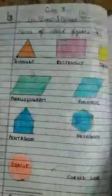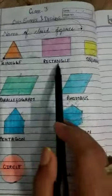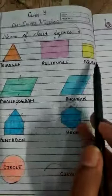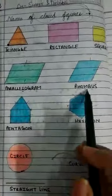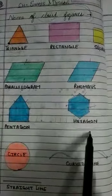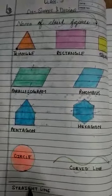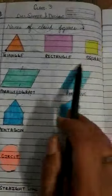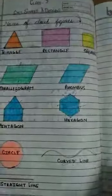If you see, this is a square. In the previous video I have told you that this is the triangle, this is rectangle, this is a square, this is parallelogram, rhombus, pentagon, hexagon, circle, curve line and straight line. So today we will study the properties of square.